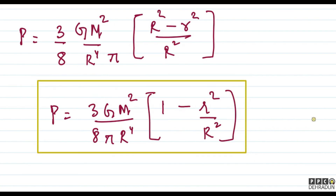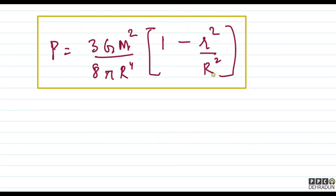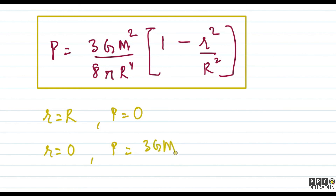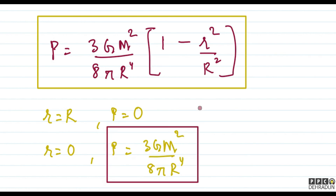Toh bacho hum log ne nikal liya pressure as a function of distance small r from the center of the sphere. Is expression se hum dekhte hain ki jab small r equal to capital R ho, pressure 0 hota hai. Aur jab small r equal to 0 ho, yaani center of the sphere par, pressure = 3 G M squared upon (8 pi R to the power 4) ho jata hai. Yahi second part mein poochha gaya tha. I hope aapko yeh solution acche se samajh aaya hoga. In case koi doubt rahe, feel free to contact me. Take care bacho, bye bye.